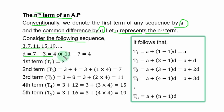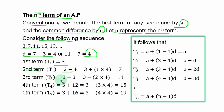The common difference D equals second term minus first term, which is 4. Or third term minus second term, also 4. The first term is 3. The second term is first term plus common difference. The third term is first term plus 2 times common difference, and so on.